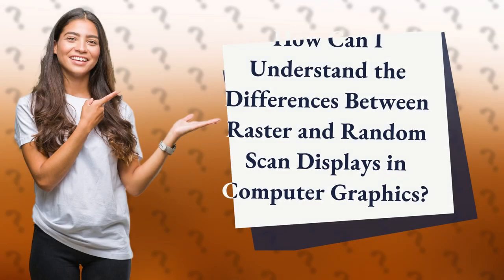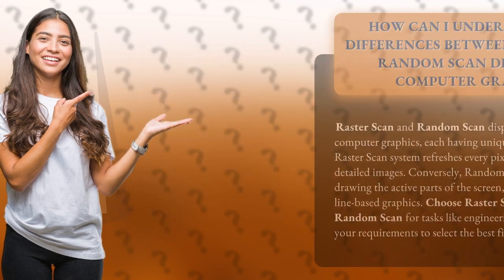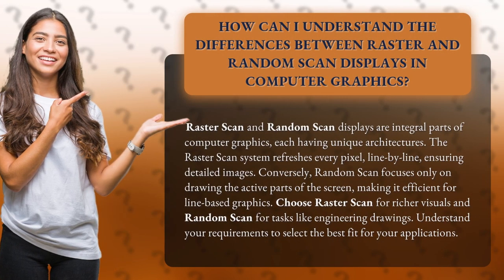How can I understand the differences between raster and random scan displays in computer graphics? Raster scan and random scan displays are integral parts of computer graphics, each having unique architectures. The raster scan system refreshes every pixel, line by line, ensuring detailed images.